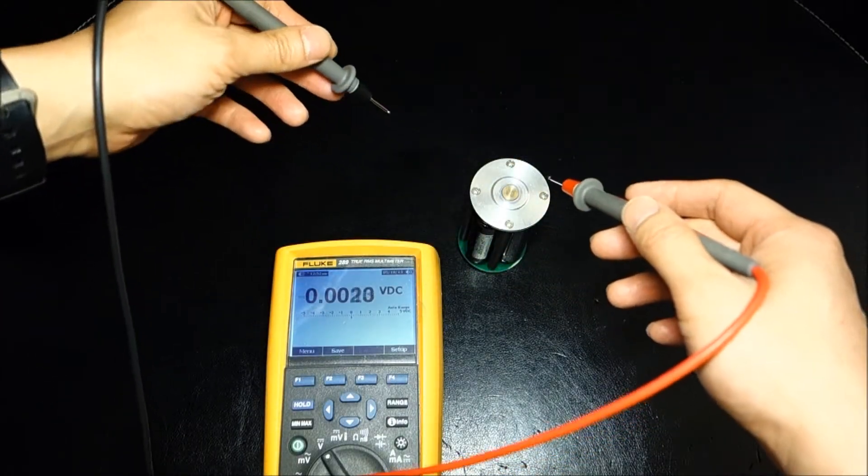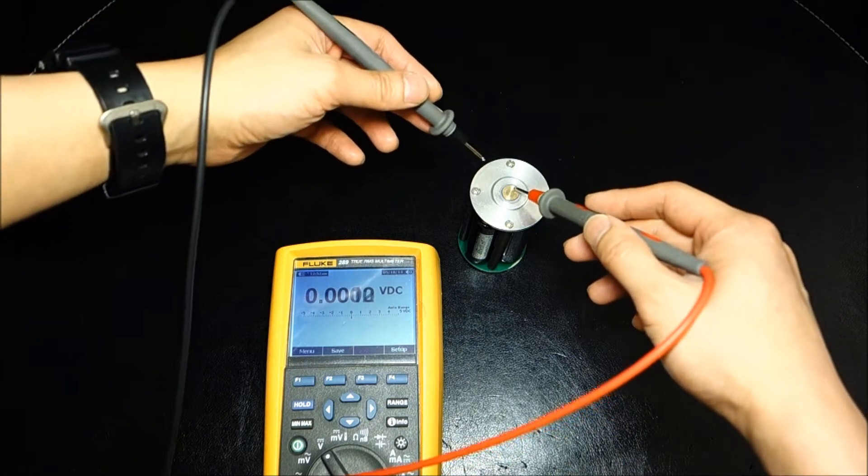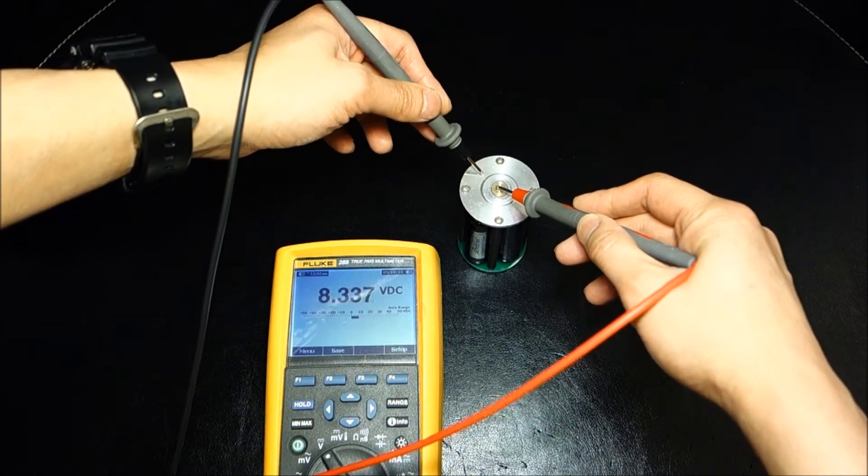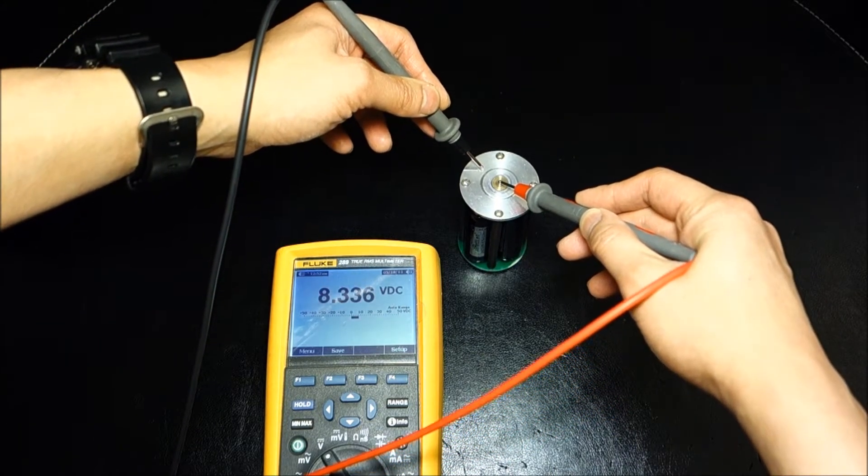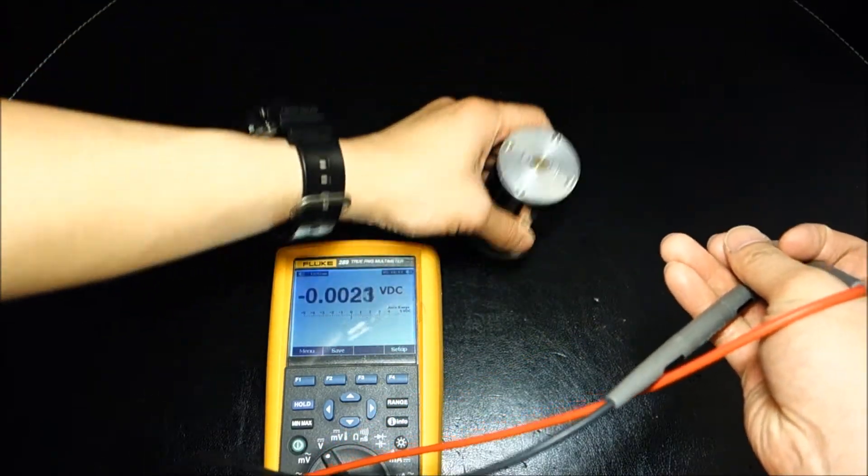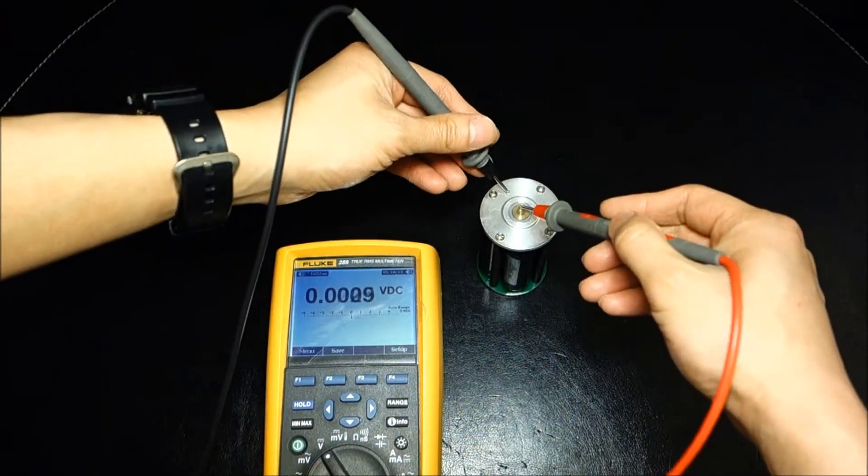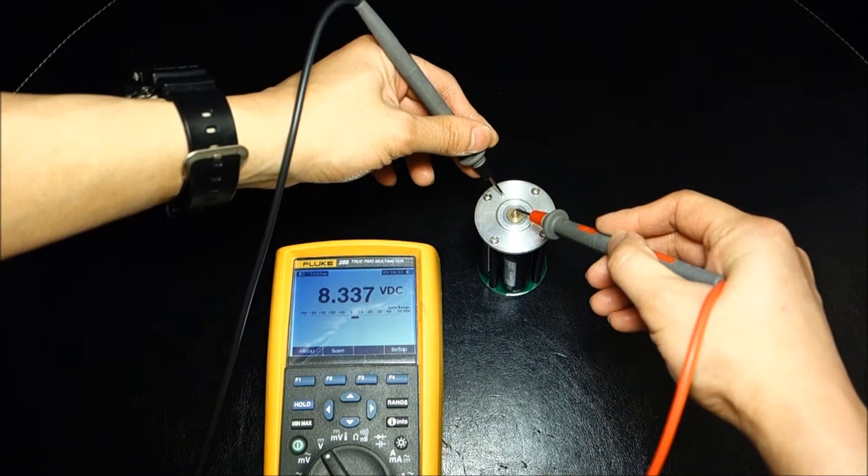Now, case in point, I've got my Fluke 289 here to help measure the voltage, and as you can see, it's, again, close to 8.4. I used it up a little bit, so it's not exactly right at 8.4 either end.